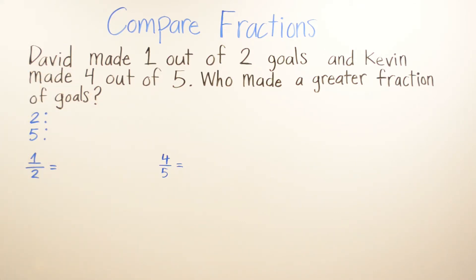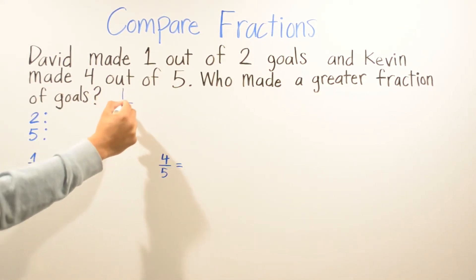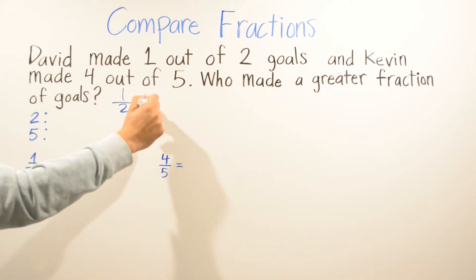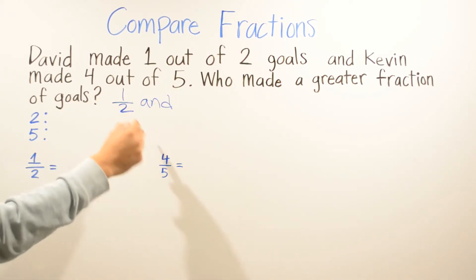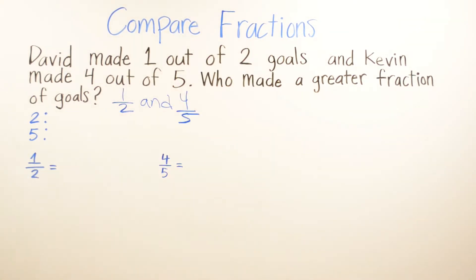In this example, David made one out of two goals and Kevin made four out of five. Who made a greater fraction of goals? So we have David with one out of two goals and Kevin with four out of five. We have two fractions to compare: one half and four over five.